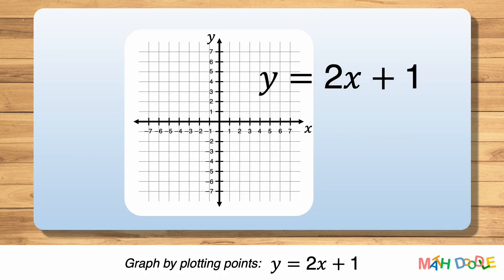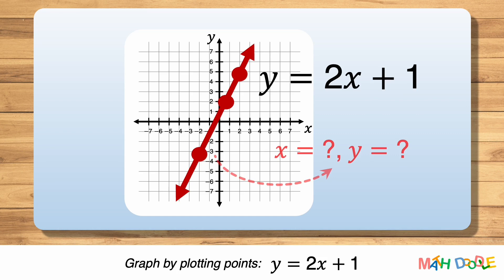To graph the equation y equals 2x plus 1, we are going to find several points that the line passes through. The points on the line are solutions to the equation. Let's find points that are solutions to y equals 2x plus 1.